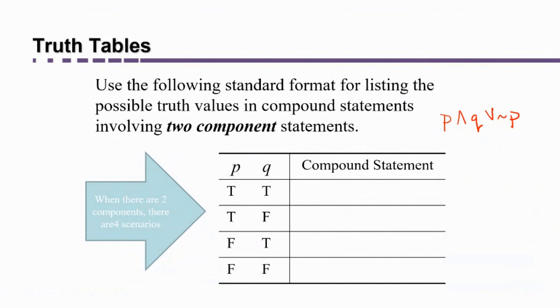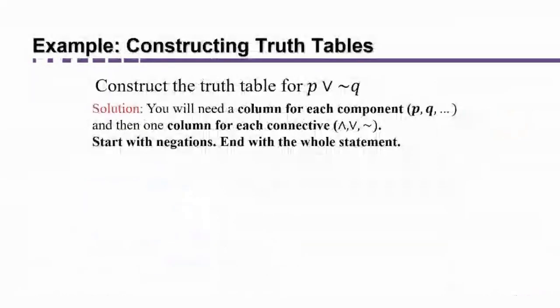And when that's the case, there are exactly these four scenarios: true true, true false, false true, and false false. So you're always going to start when you have two components in your statements with setting up the truth table in this way.